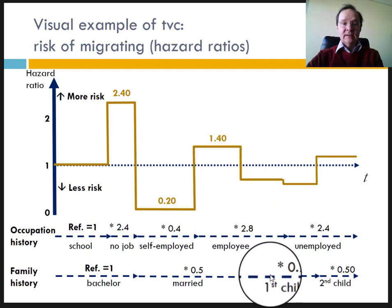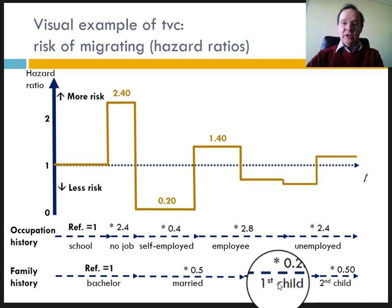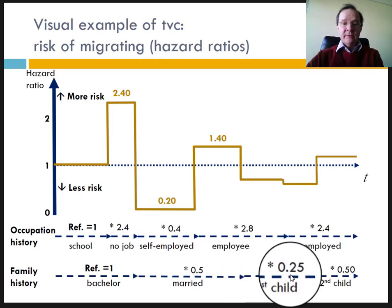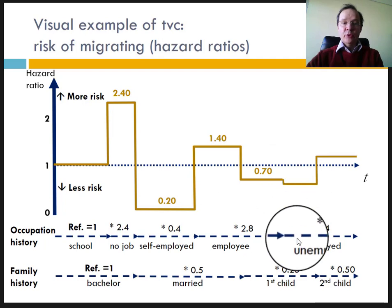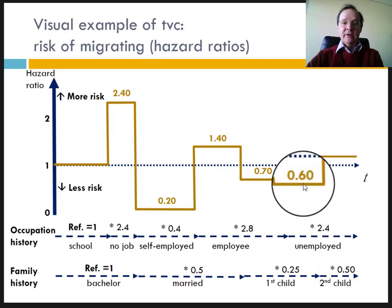However, when she had a child, the chances were again divided by 2 as compared to when she was married with no children. The relative chances were then 30% less than for the reference category. When she was unemployed again, her chances reduced slightly to about 40% below the chance of the reference category.